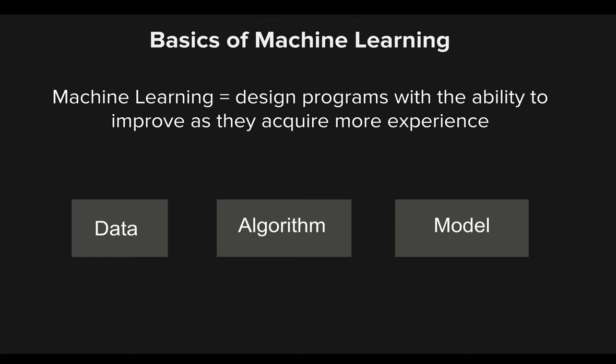We have three key components in every machine learning model: the data, which is used to build our model; the algorithm, which takes that data and prioritizes and weights it; and then the model, which is able to produce an output based on our data through our algorithm.